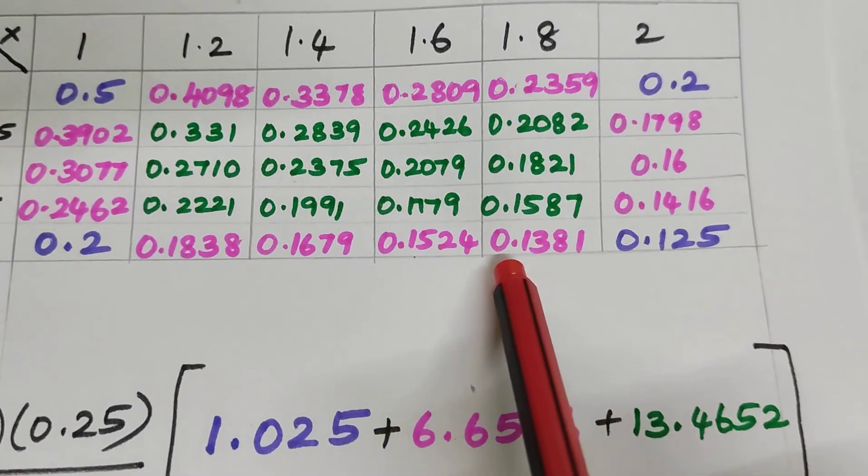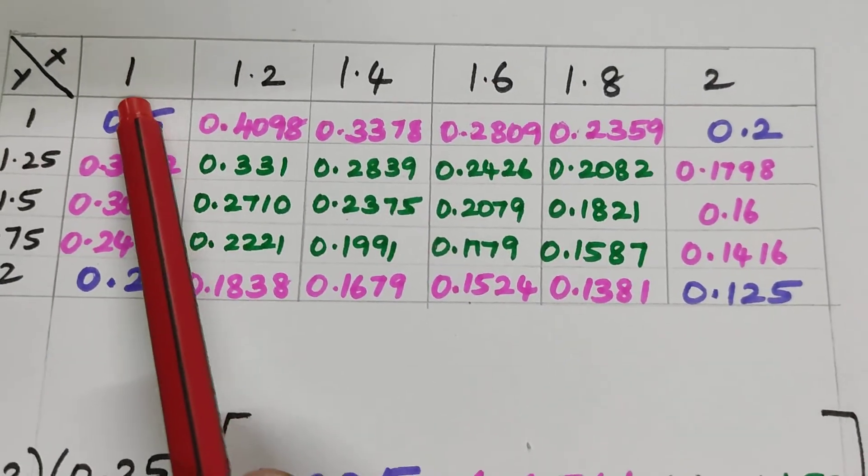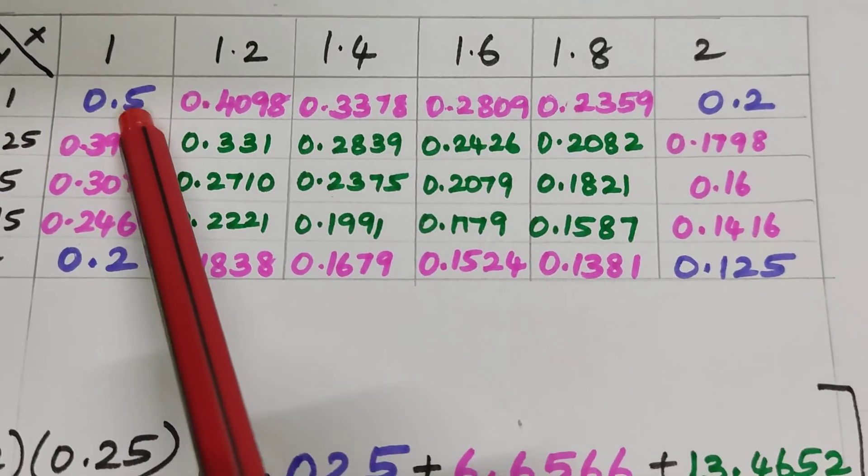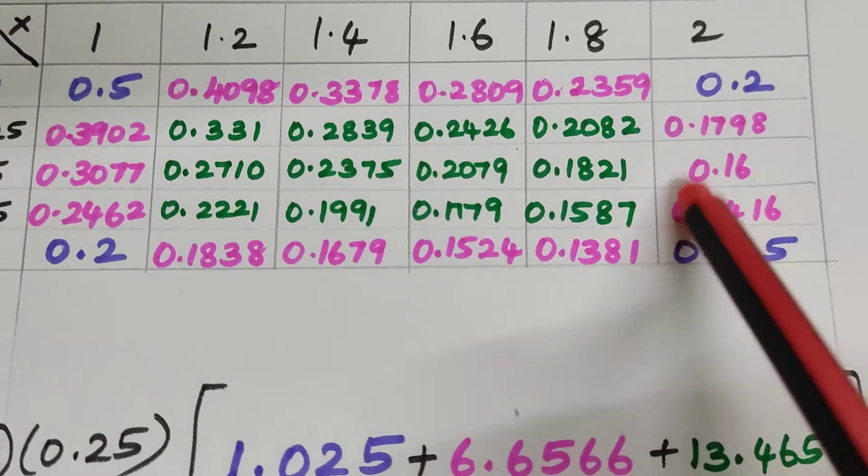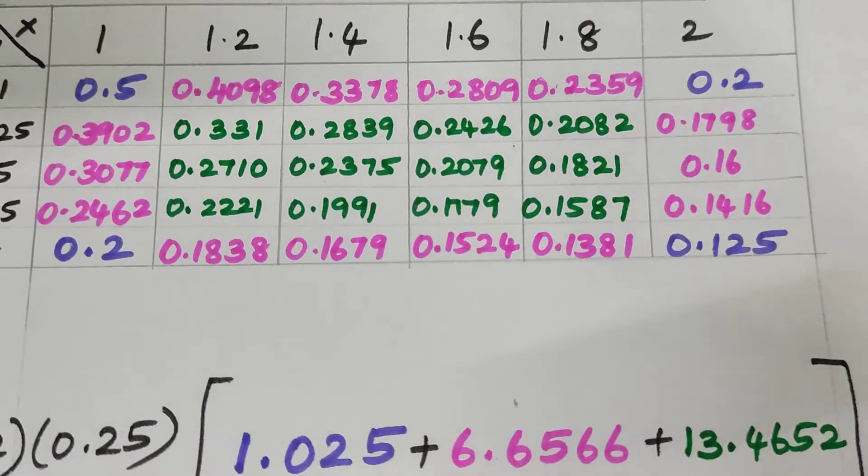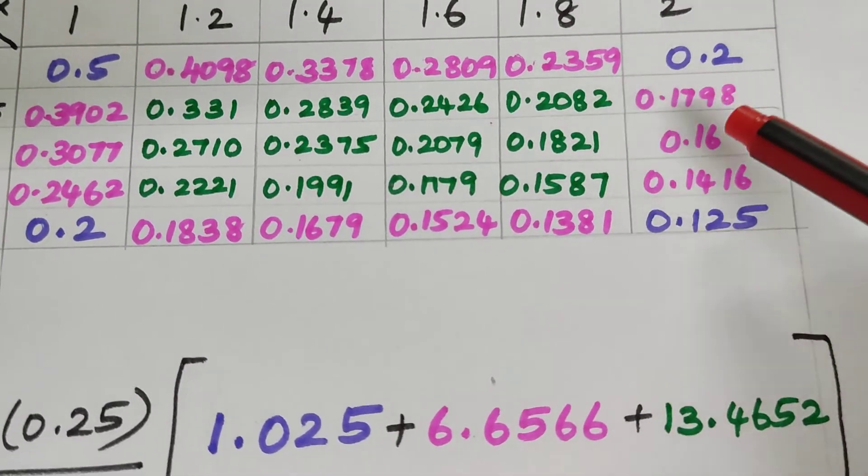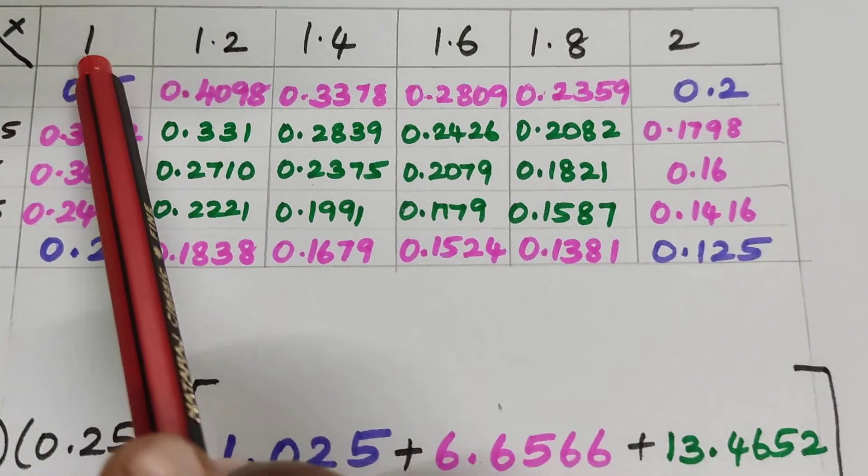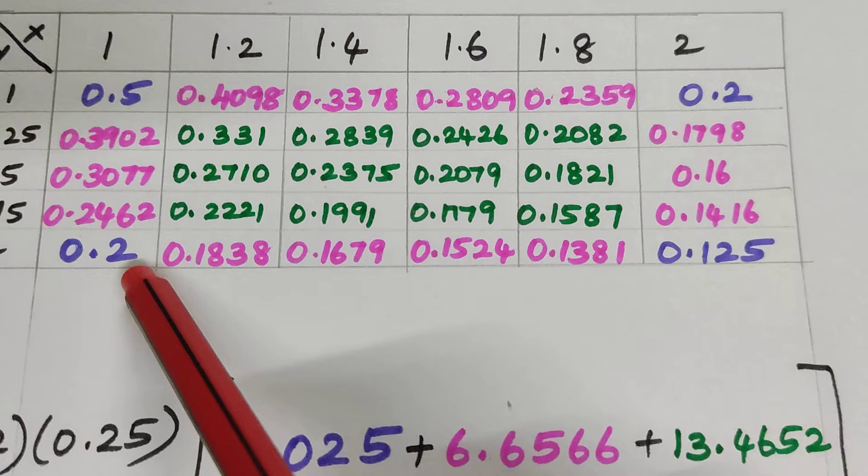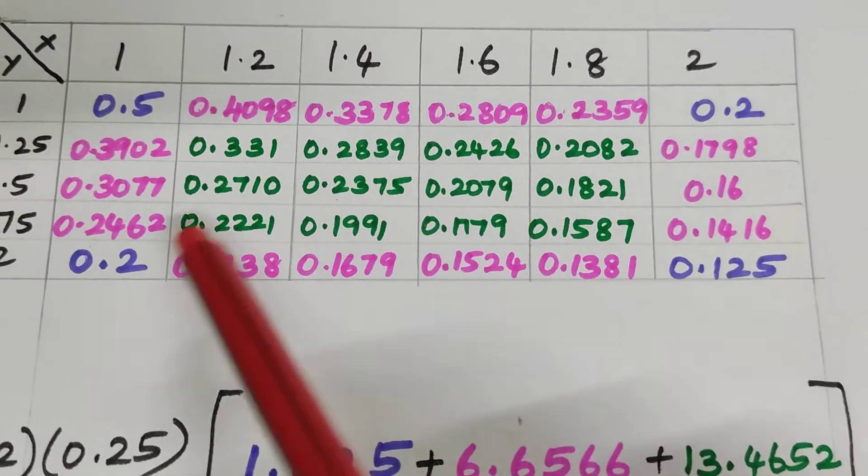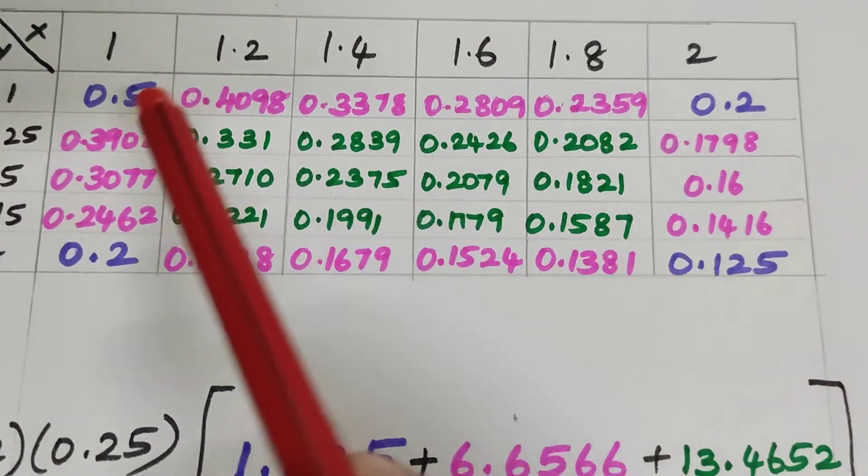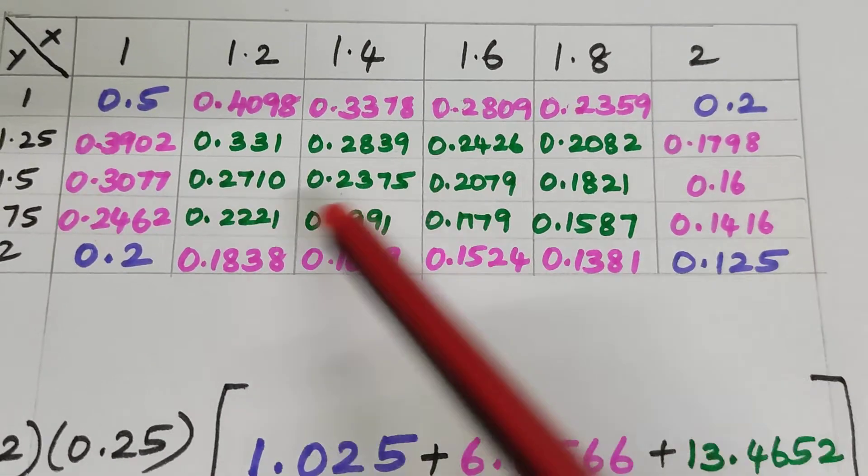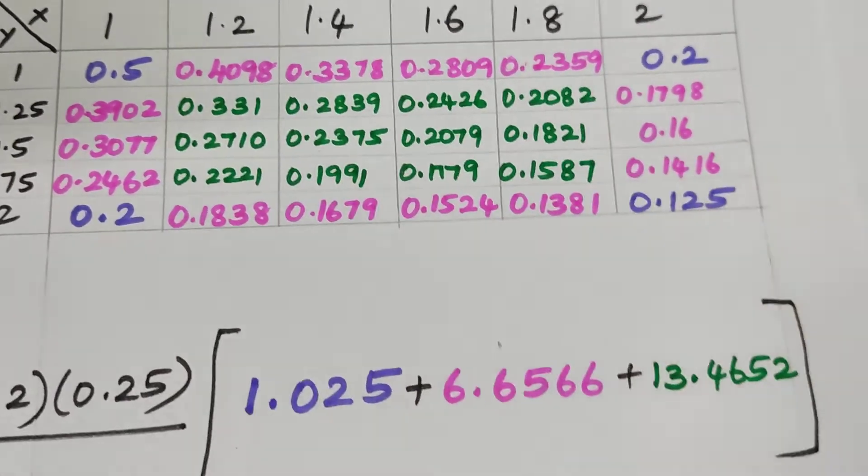Let us observe this particular table value. I have colored it in different colors. First, this is the boundary which I am drawing. These values are in a rectangular shape. It is okay if we have it in a rectangular shape or in a square shape. Pick up the corner values, that is very very important. The corner values are colored in purple color.